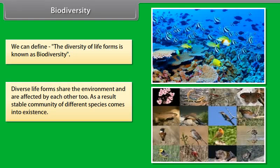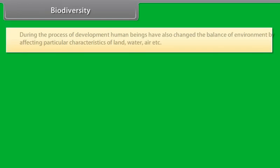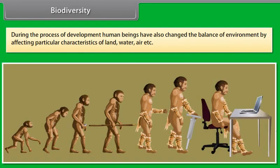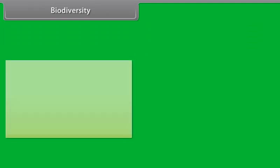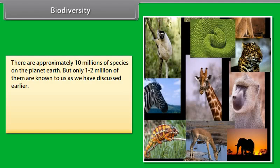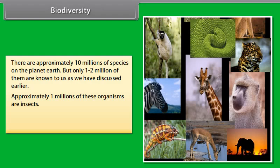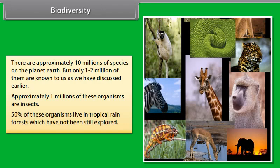Biodiversity. We can define biodiversity as the diversity of life forms. Diverse life forms share the environment and are affected by each other, and as a result a stable community of different species comes into existence. During the process of development, human beings have also changed the balance of the environment by affecting particular characteristics of land, water, air, etc. There are approximately 10 million species on planet Earth, but only 1 to 2 million of them are known to us.